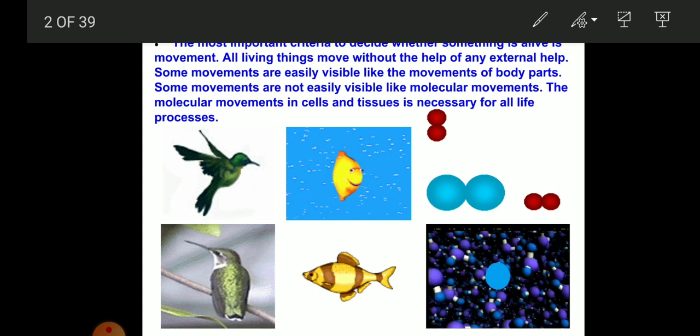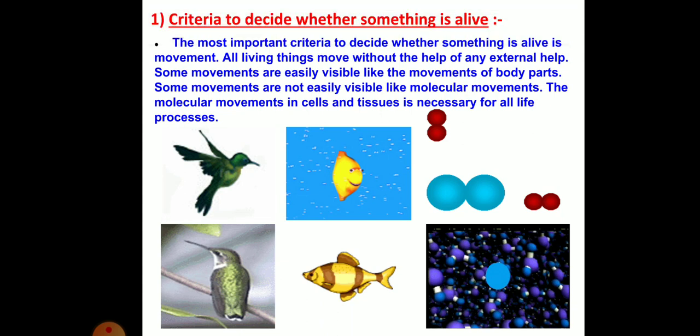Every living organism is moving without the help of external help. Some movements are easily visible, like the movement of body parts — when you see a march past, their movement is in one direction and is very easily identifiable. Some movements are not easily visible, like molecular movements. The molecular movement in cells and tissue is necessary for all life processes.